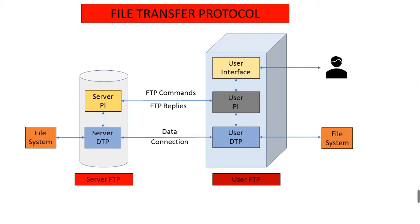How does the FTP protocol work? Firstly, the user must provide a user identification and a password, and then after providing this authorization information, the user can transfer files from the local file system to the remote file system. The user interacts with FTP through an FTP user agent. The user provides the host name of the remote host, and then the FTP client process in the local host establishes a TCP connection with the FTP server process in the remote host. The user then provides the user identification and password, which are sent over the TCP connection as part of FTP commands.